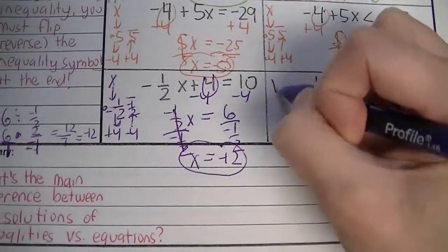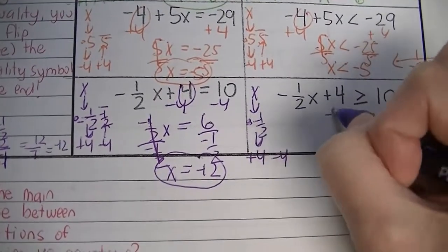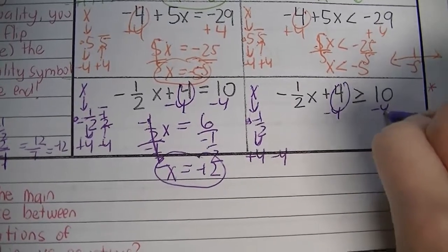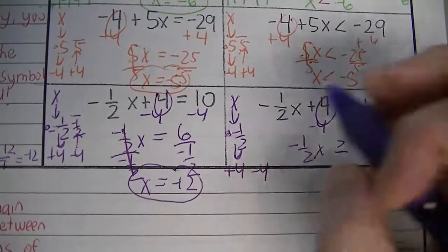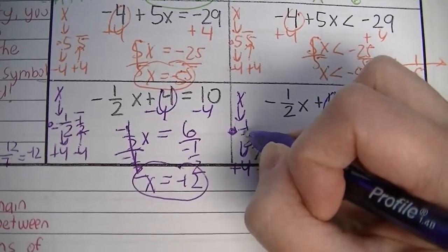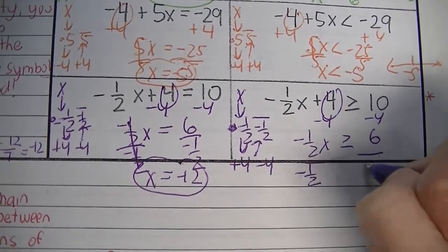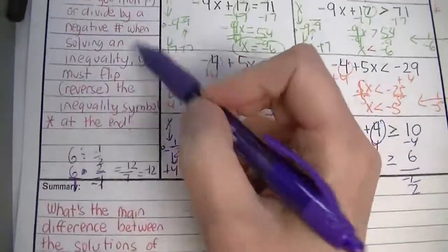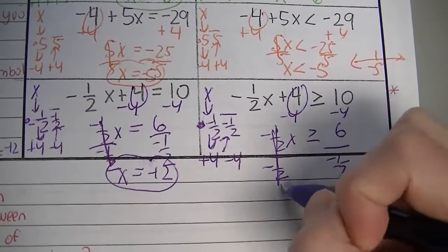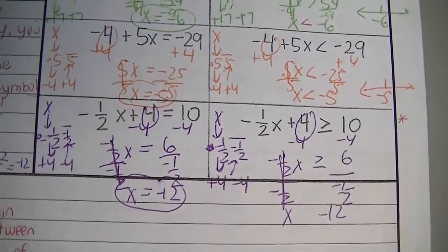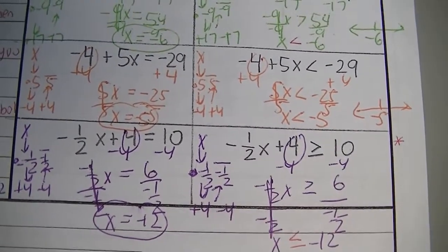On the inequality side — build it: start with x, multiply by negative 1 half, add 4. Inverse operation of adding 4 is subtract 4 from both sides. 10 minus 4 is 6. Bring down your negative 1 half x and your inequality sign. Inverse operation of multiplying by negative 1 half is to divide by negative 1 half. We're dividing by a negative number, so you know what to do. 6 divided by negative 1 half is negative 12. And it's the very end, so reverse the sign. Here's what the sign looked like before — now reverse it. Go ahead and graph that.